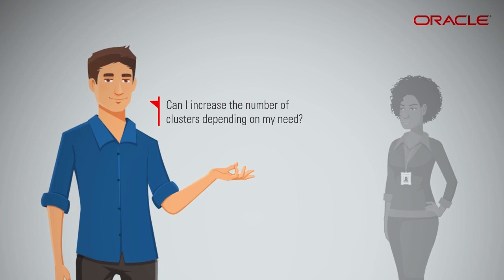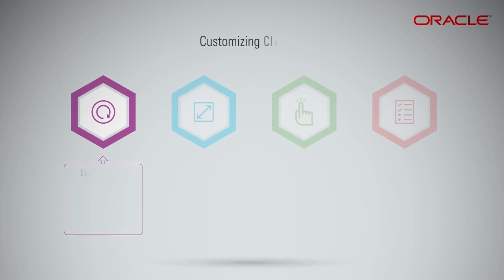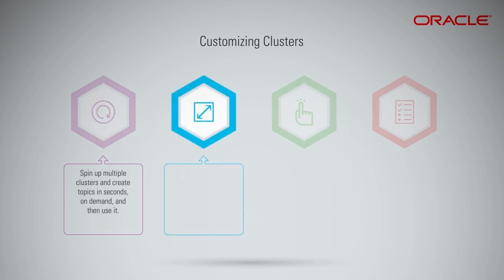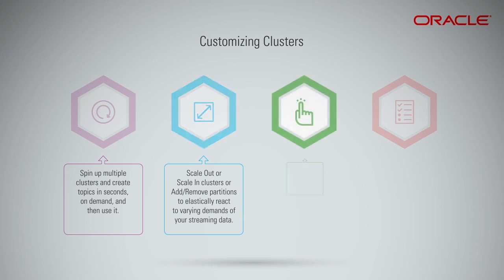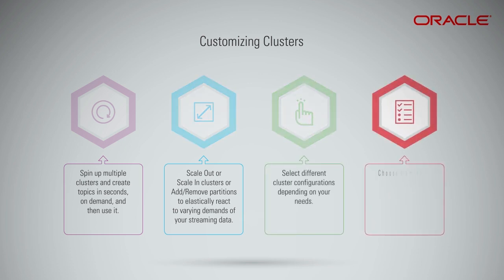Can I increase the number of clusters depending on my need? Yes, you can spin up multiple clusters and create topics in seconds, on demand, and then use them. You can also scale out or scale in clusters, or add or remove partitions to elastically react to varying demands on your streaming data. Select different cluster configurations depending on your needs. Choose from Kafka Native, REST, and Streams APIs, and CLIs to manage, use, and extend the service.